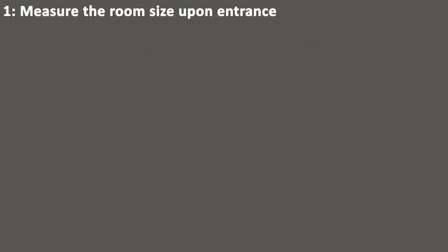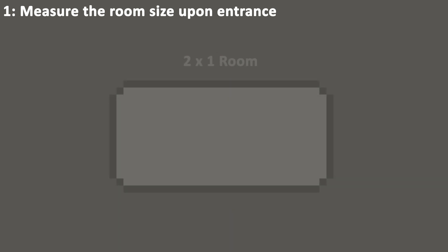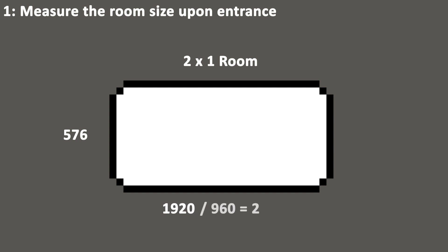So here's how this part works. First, measure the size of the room. As soon as the room is loaded, the mapScreen object records its size and translates that to cells. In GIGASWORD, a 1x1 room is 960 wide by 576 tall. Therefore, a 2x1 room would be 1920 by 576. The mapScreen object divides 1920 by the width of one cell, 960, and confirms that this room is 2 cells wide.